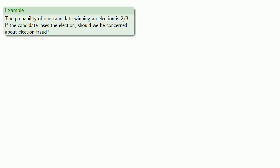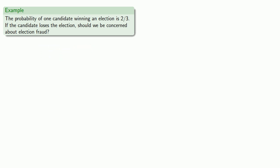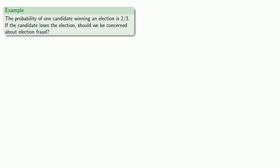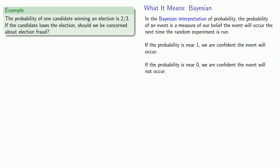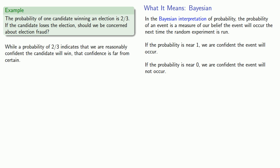So let's say the probability of a candidate winning an election is two-thirds. If the candidate loses the election, should we be concerned about election fraud? You should ask yourself: is the outcome of an election known before the election actually occurs? If we're still living in a free society, then elections are random experiments — their outcomes are not predetermined. So in the Bayesian interpretation, that probability of two-thirds indicates we are reasonably confident the candidate will win, but not certain. We might say that a loss would be unexpected, but not unprecedented.